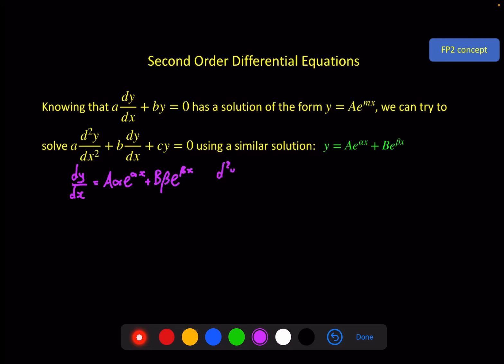Second derivative. Same sort of thing will happen. Now it's a α² e^(αx) + b β² e^(βx).